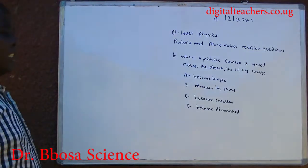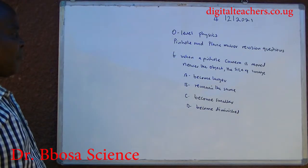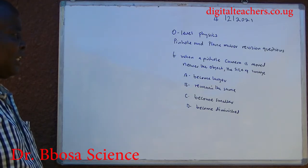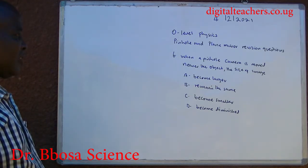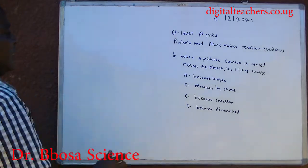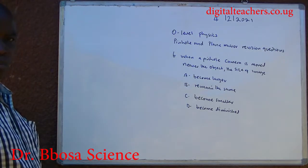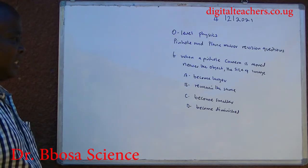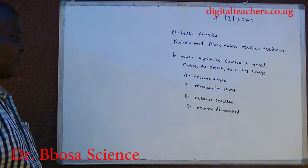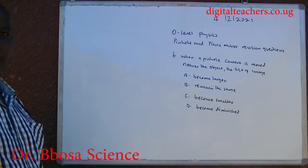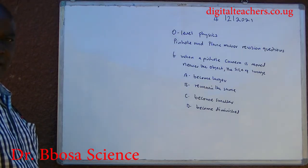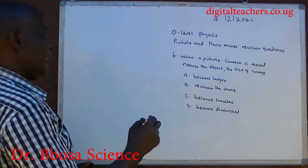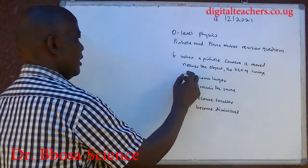Number six: when a pinhole camera is moved nearer the object, the size of the image A, becomes larger; B, remains the same; C, becomes smaller; D, becomes diminished. You can pause and answer. The answer is A.